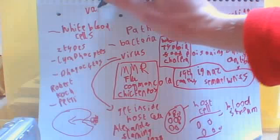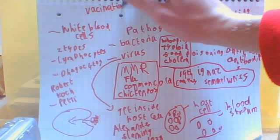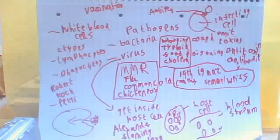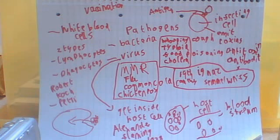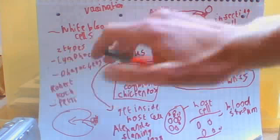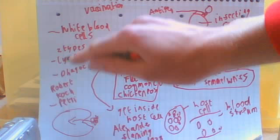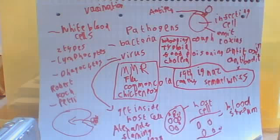So the way we do this is by vaccination. Basically what happens with vaccination is you get a dead or weakened form of the particular pathogen, which is injected into our body. And what this does is it stimulates our immune system — it stimulates our lymphocytes to produce a particular type of antibody which will fight against this particular infection. So that's how that works.